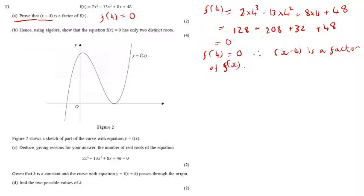Lovely. Right. Part B. Hence, using algebra, show that this equation has only two distinct roots. So job number one, we're going to factorise f of x by dividing through by x minus 4. So we're going to do some algebraic long division here.